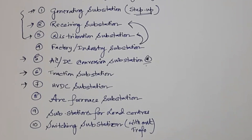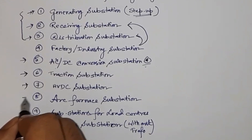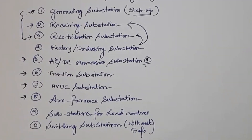Then there is the arc furnace substation. An arc furnace operates at low voltage but high current to generate more heat. The power is brought in at high voltage and the voltage is then reduced to increase the current for the same amount of power. This is the arc furnace substation.